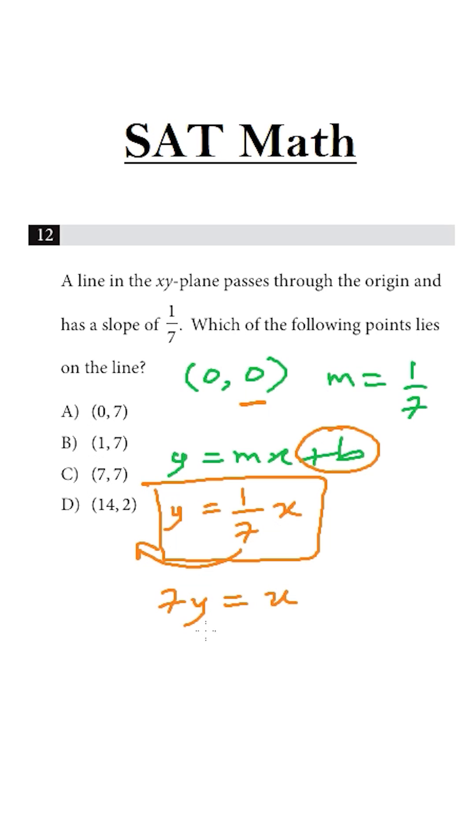So whatever the value of y is, if we multiply it by 7, we get the value of x. So x is 7 times y.